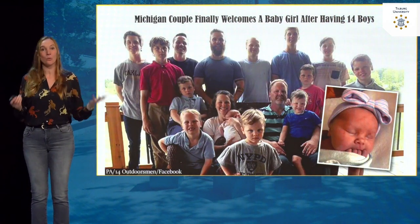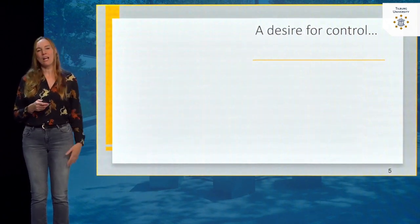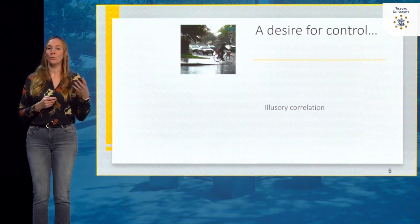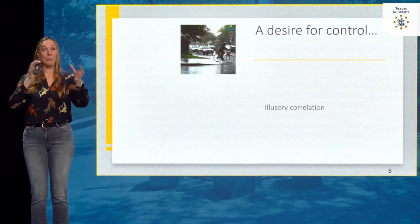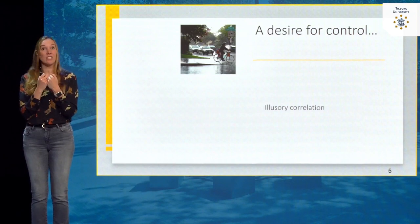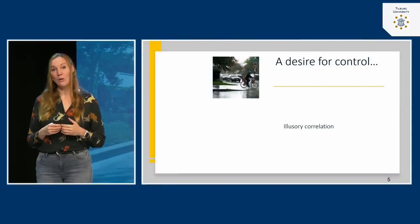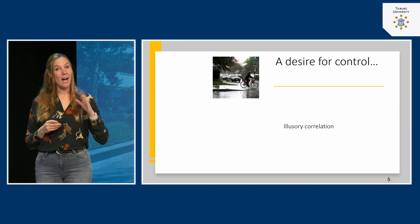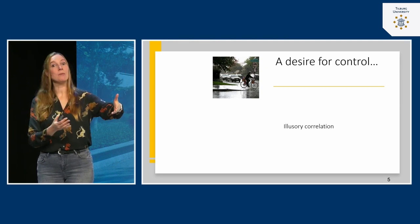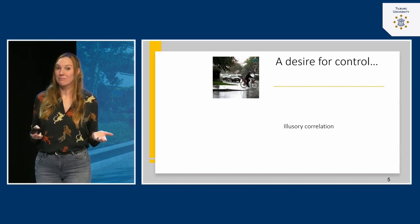This shows that our brain tries to understand the world even when things are random. We have a very big desire to control the world around us. We see relationships that are not actually there — this is called illusory correlation. We often have the idea that there's a correlation between factors that isn't actually there. For example, I feel like every time I go outside and step on my bike, it starts to rain — I experience a correlation that's not actually there.